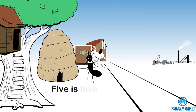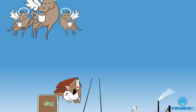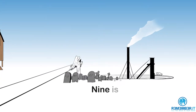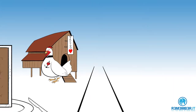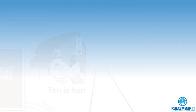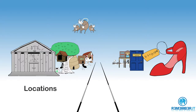The second is associated with an image linked to a shoe, which rhymes with 2. It carries on like this up to 10: 3 is tree, 4 is door, 5 is hive, 6 is sticks, 7 is heaven, 8 is plate, 9 is mine, and 10 is hen.